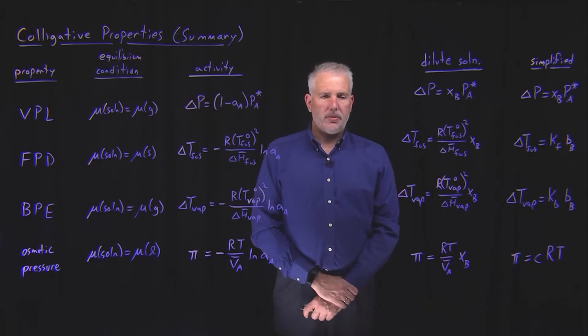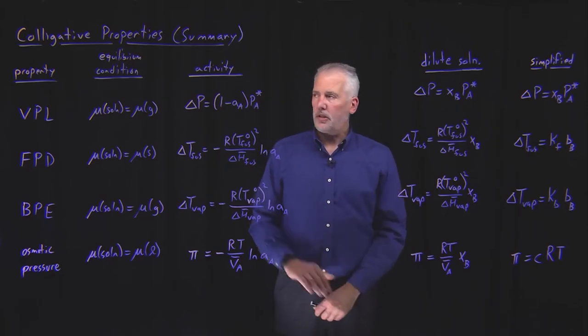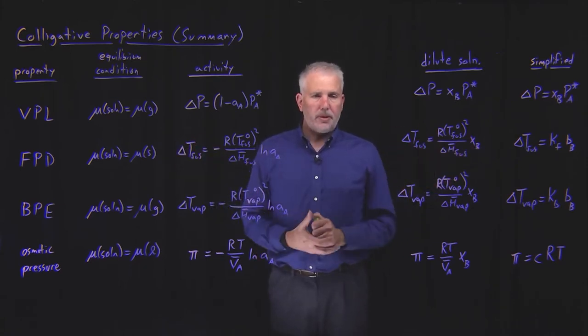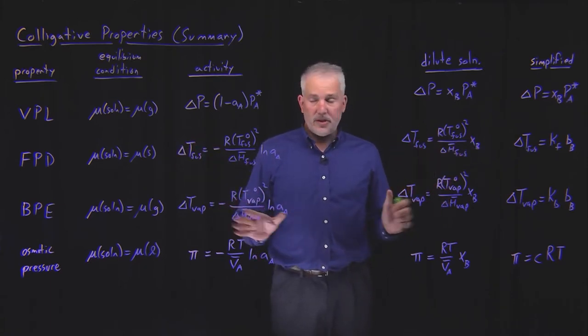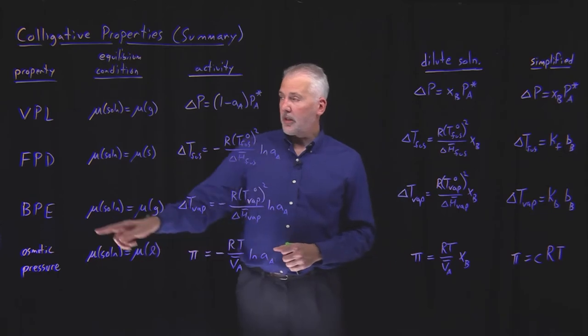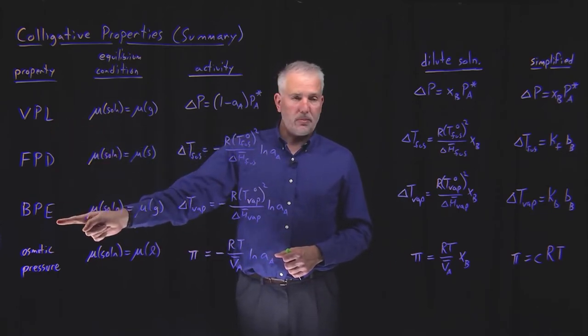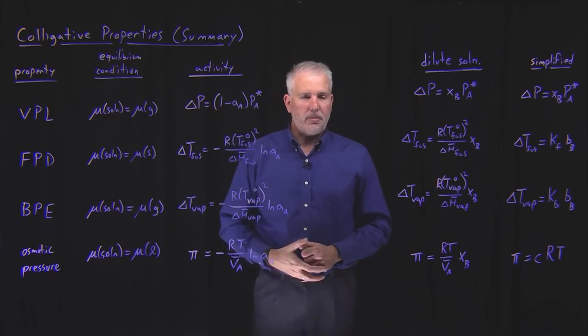Okay, let's take a minute and do a summary of all the different colligative properties we've talked about so far. What I've put up on the board here is a summary of all the equations we've seen so far for the four different colligative properties: vapor pressure lowering, freezing point depression, boiling point elevation, and osmotic pressure.